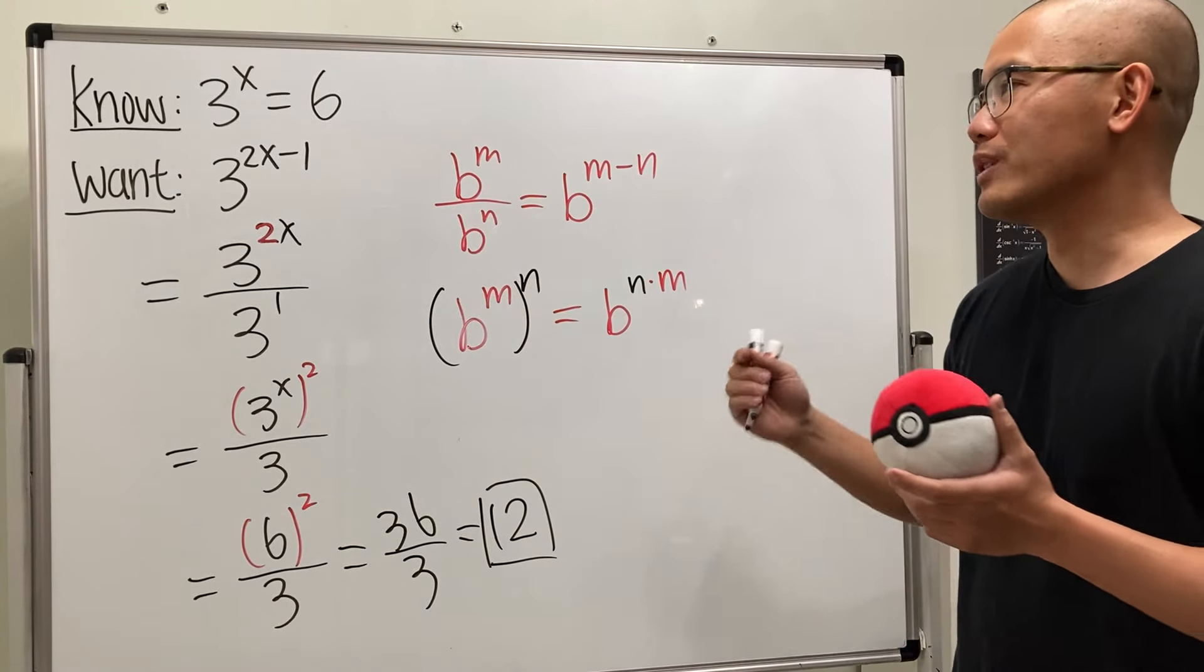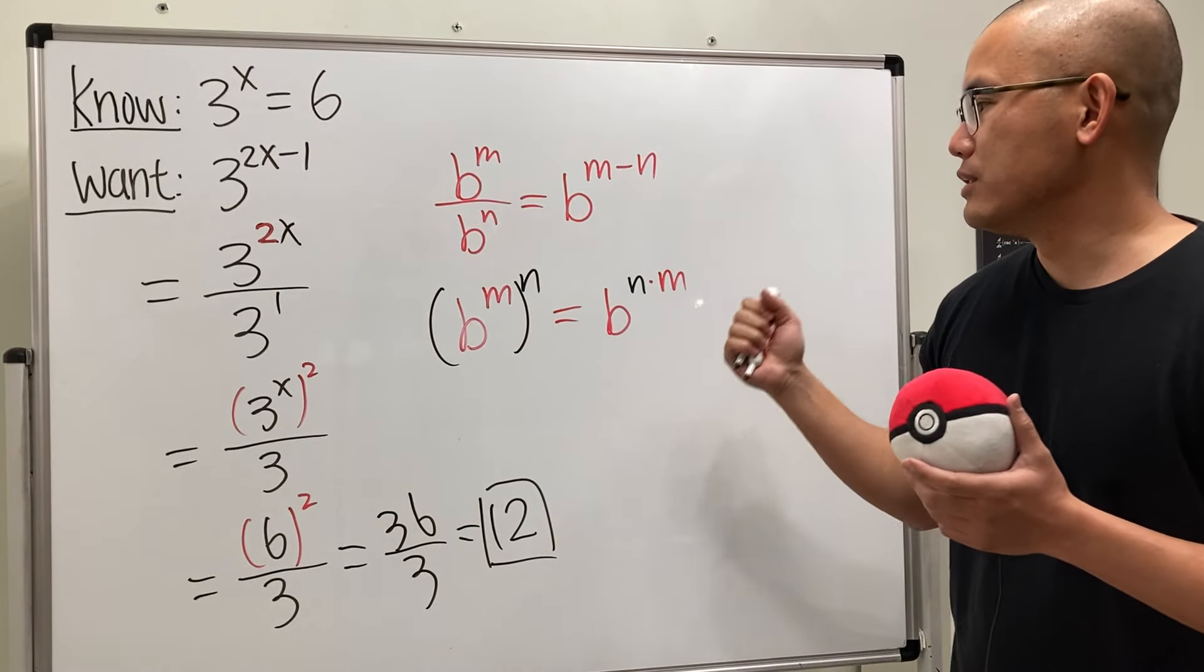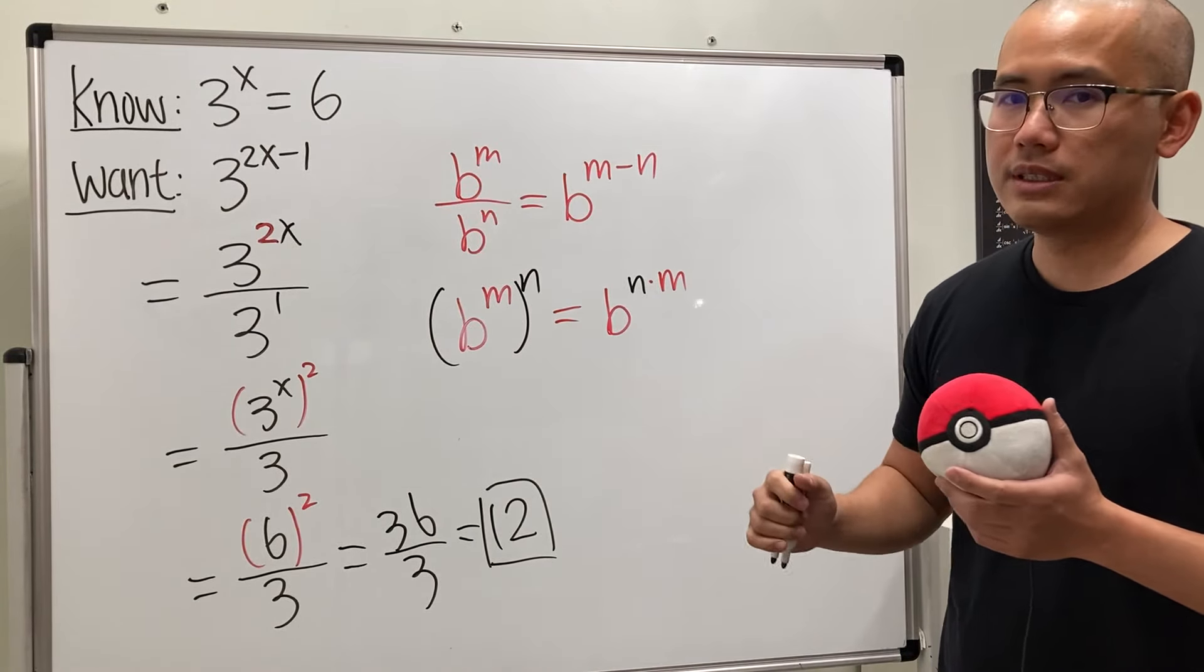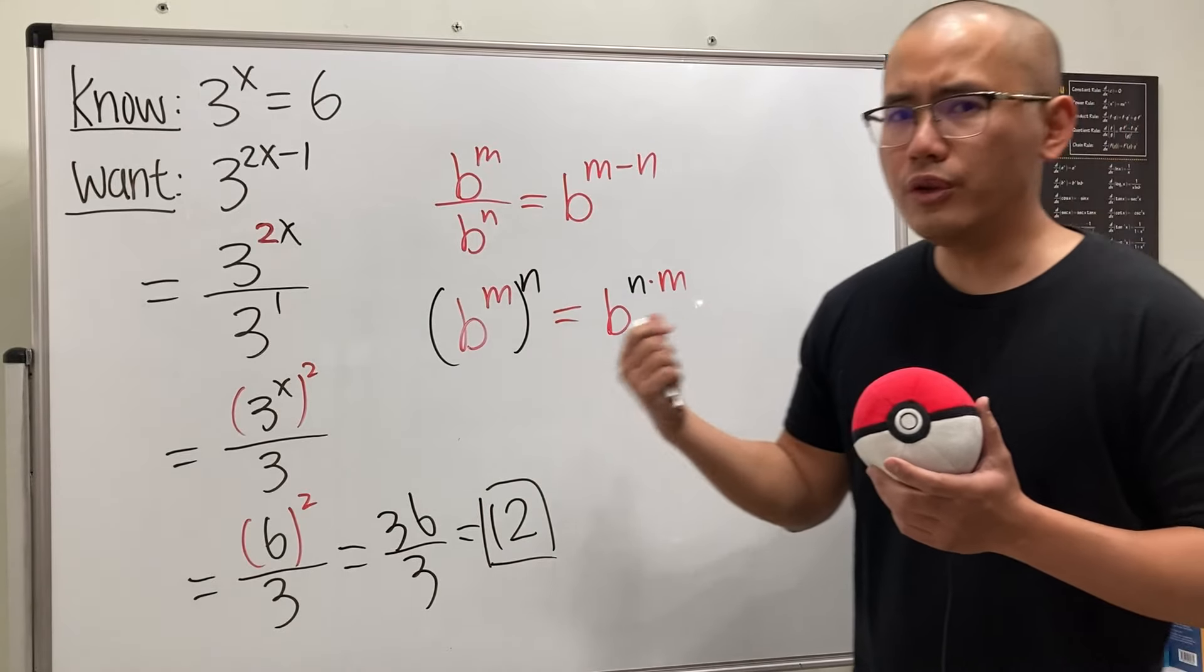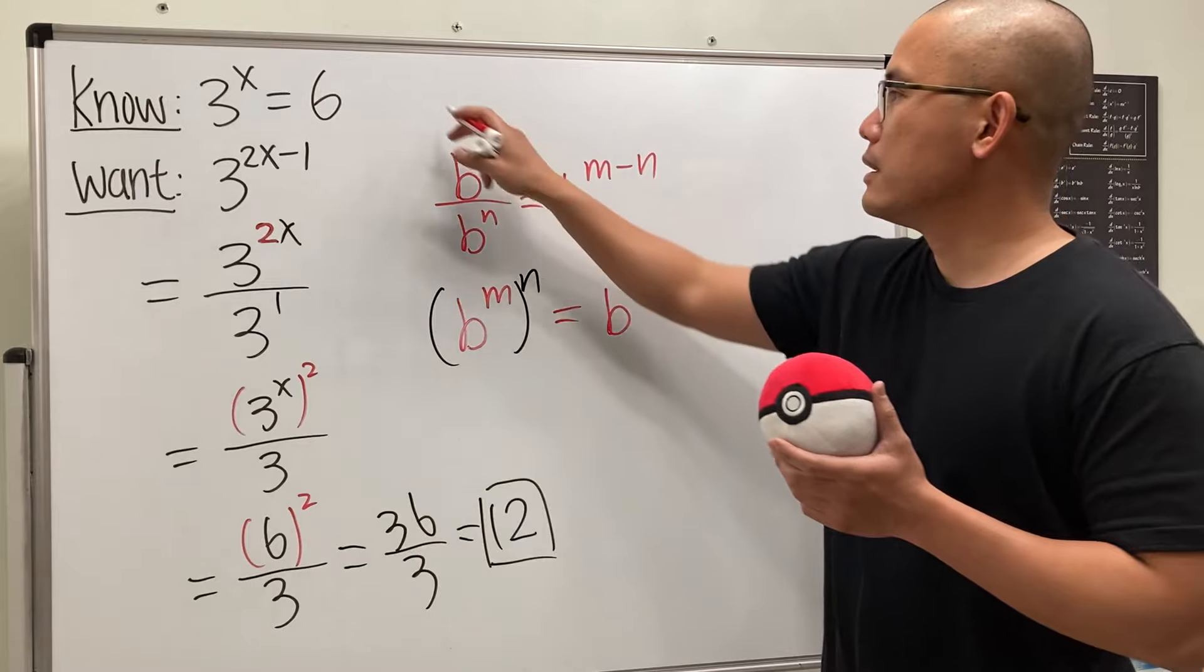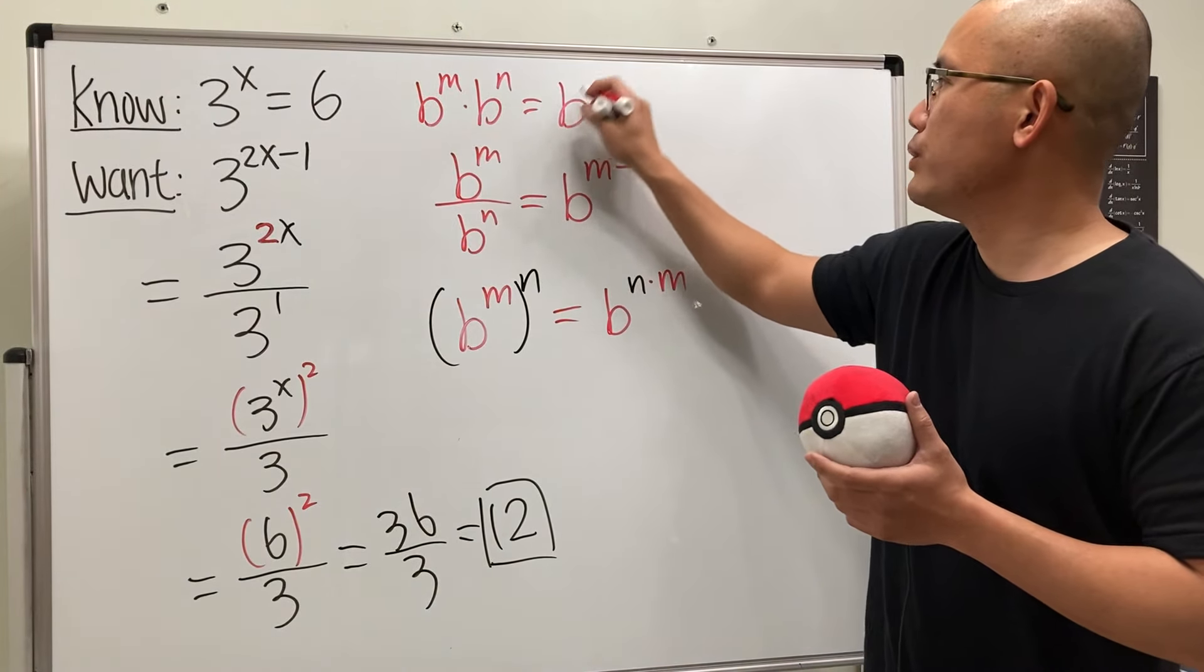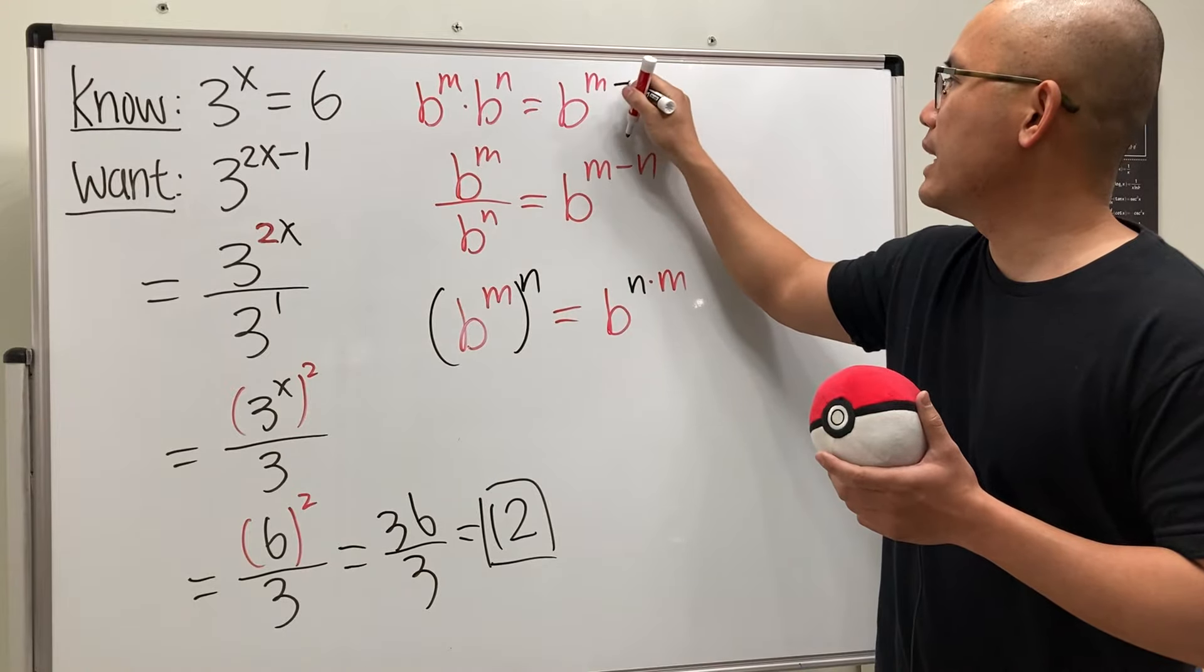So, that's it. That's how you can work it out without actually solving for x. And, again, the idea is just use the rules of exponents. And, remember, there's also another main one of the rule of exponents. When you multiply, right? b to the n times b to the n. This is b to the n plus n.